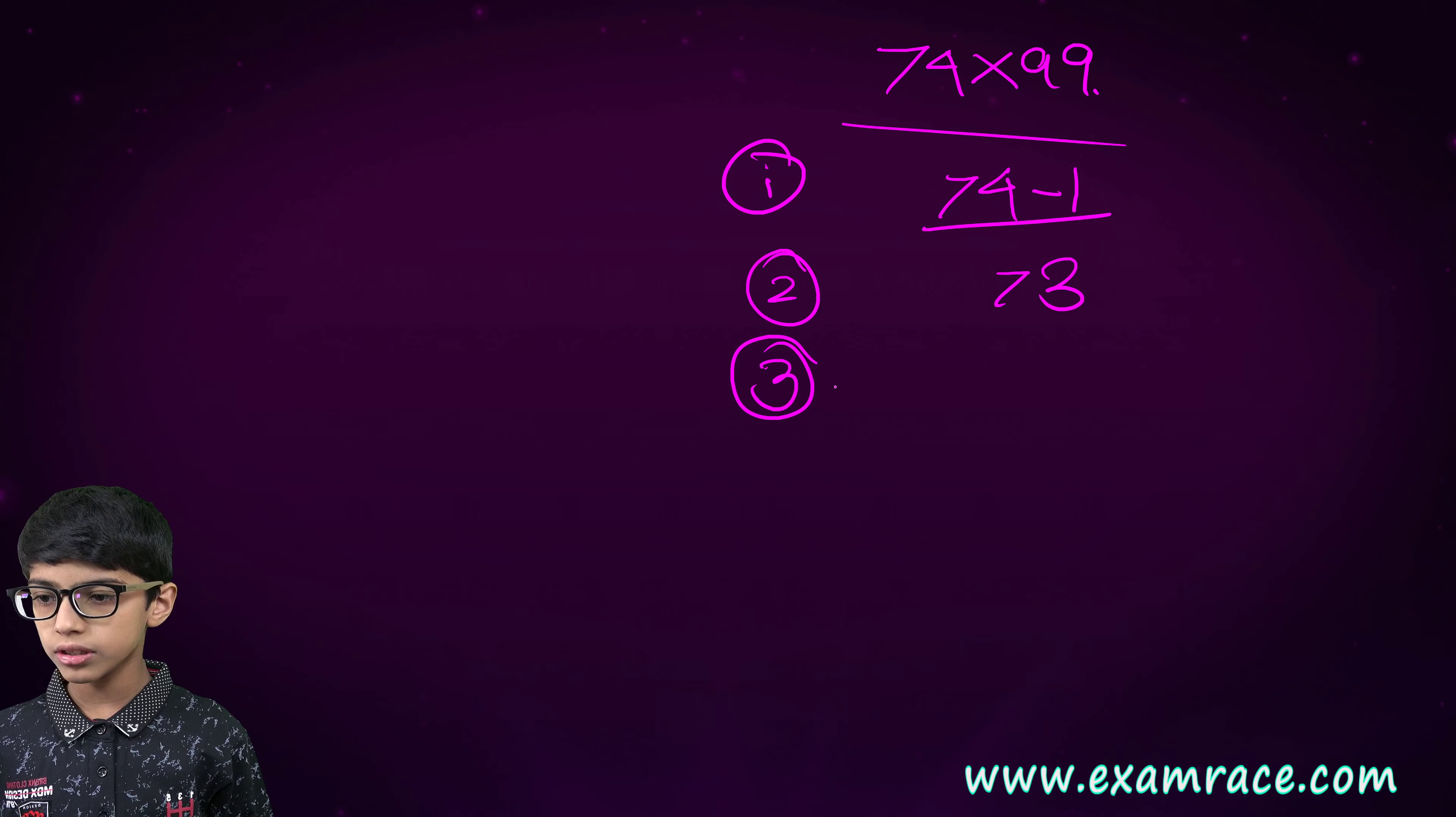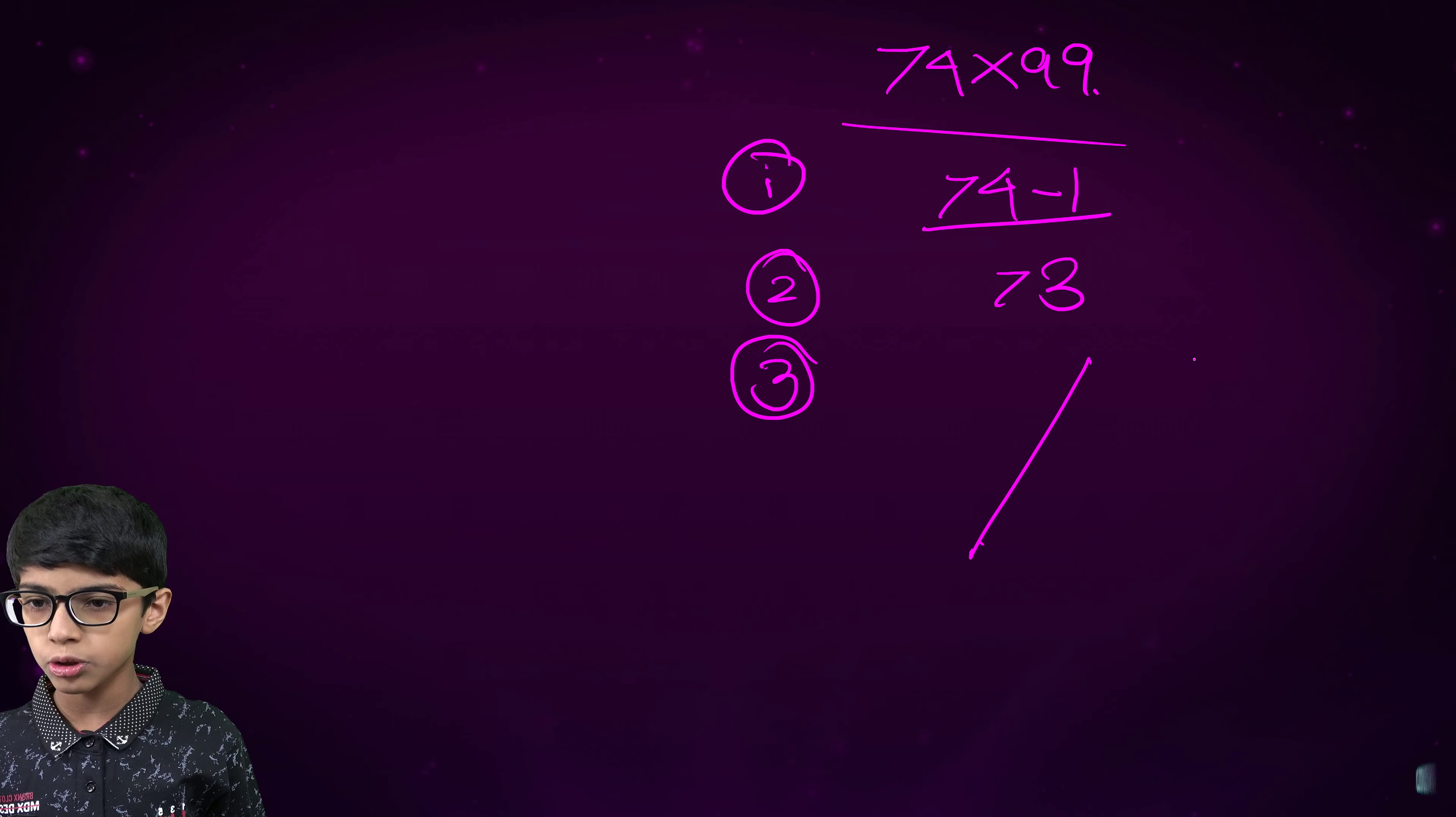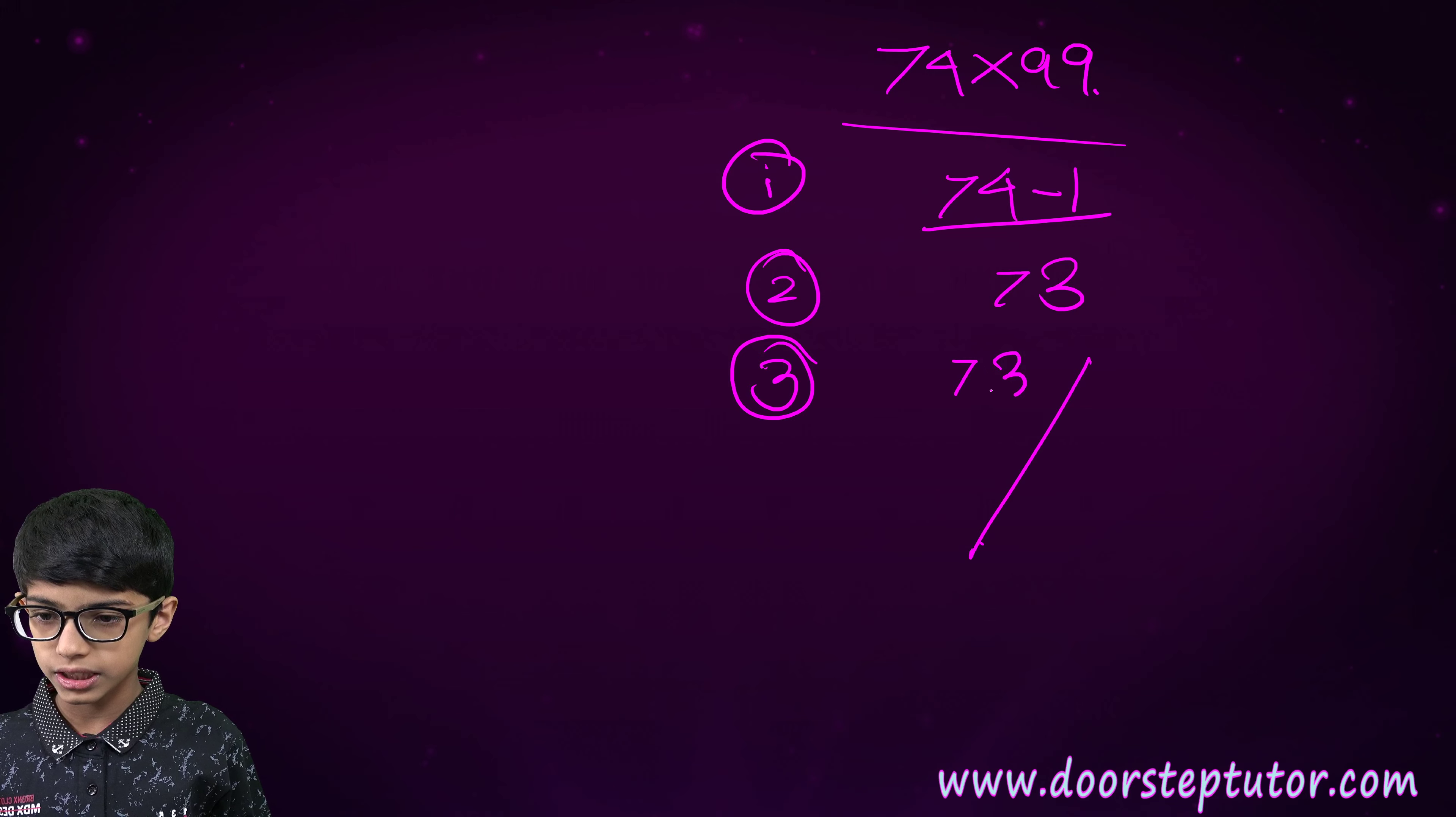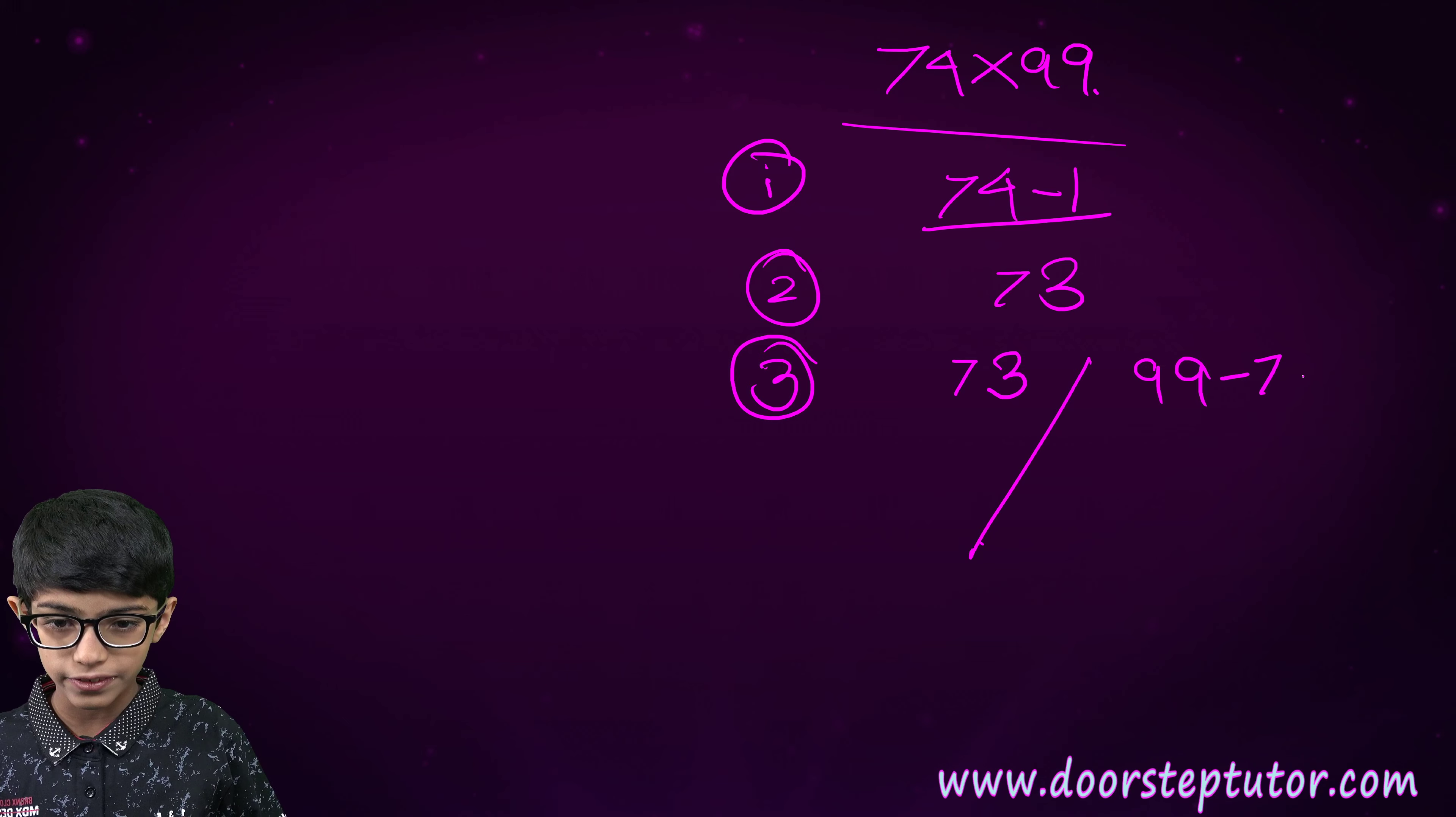Now, the third step. We will divide our answer in two parts. Here, 73. And here, 99 minus 73.